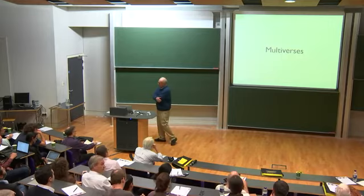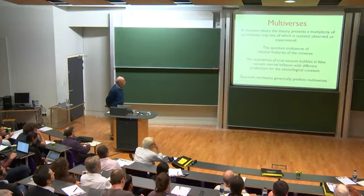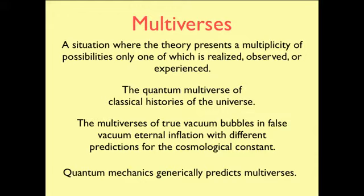By multiverse, I will mean a situation where the theory presents a multiplicity of possibilities, one of which is realized, observed, experienced, whatever you want to call it. There's already, in quantum cosmology, the quantum multiverse of the many different classical histories that are possible, one of which we're living in. There's the multiverse of true vacuum bubbles and false vacuum eternal inflation, as I've just described, with different predictions for the cosmological constant. So quantum mechanics, by its very nature, being probabilistic, predicts multiverses in this sense.